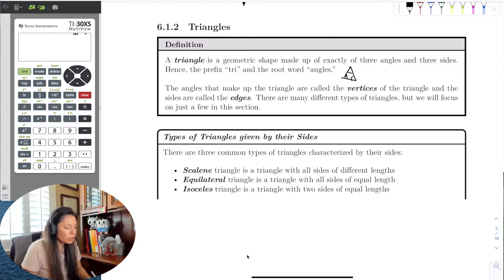Now, the word tri comes from the word three, and then the root word angles. So three angles, triangle. The angles that make up the triangle are the vertices, and then the sides are called edges, but I call them sides.